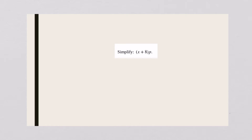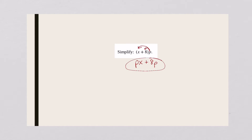This time notice the number we're distributing is on the right side, and that's totally okay. So p times x is px — you could write that as xp. Typically proper form is to write it in alphabetical order. p times positive eight is a plus 8p. Don't forget to separate your terms by either a plus or a minus — in this case that's a positive, so I put a plus there.